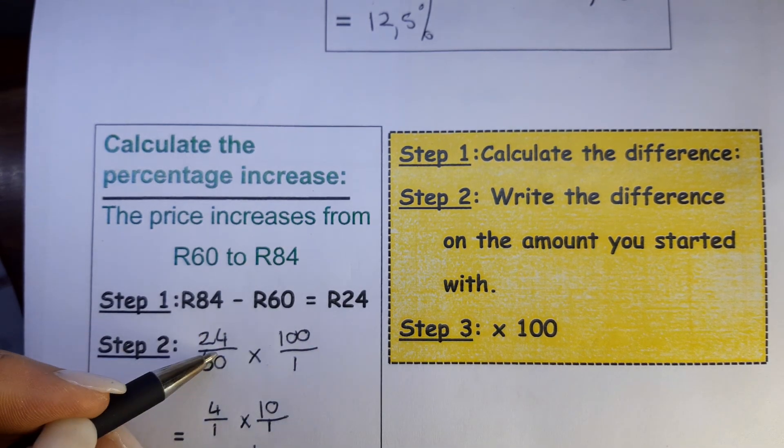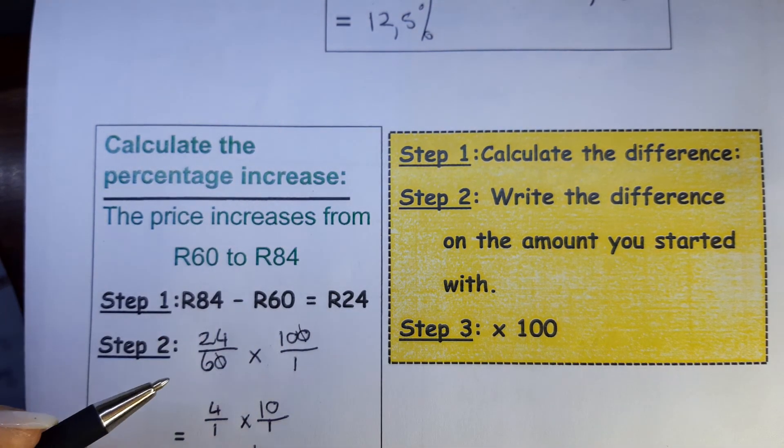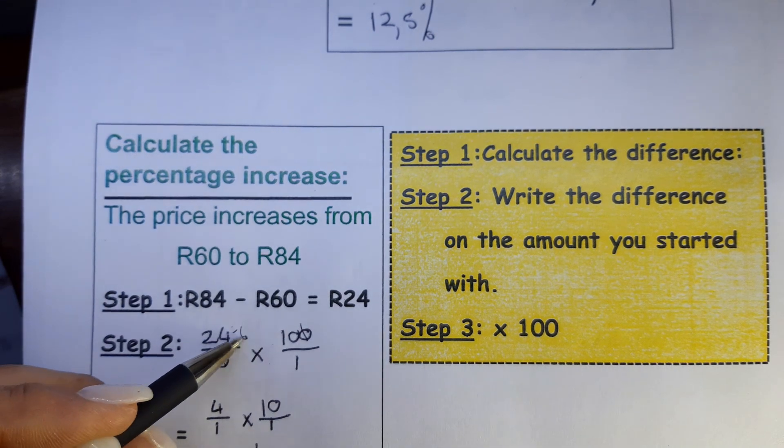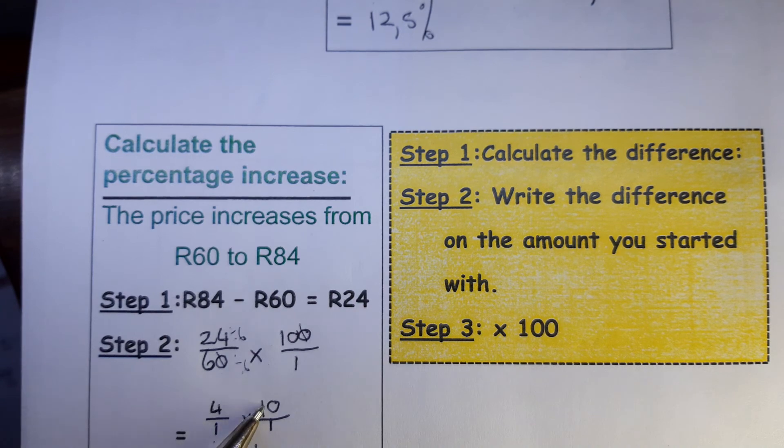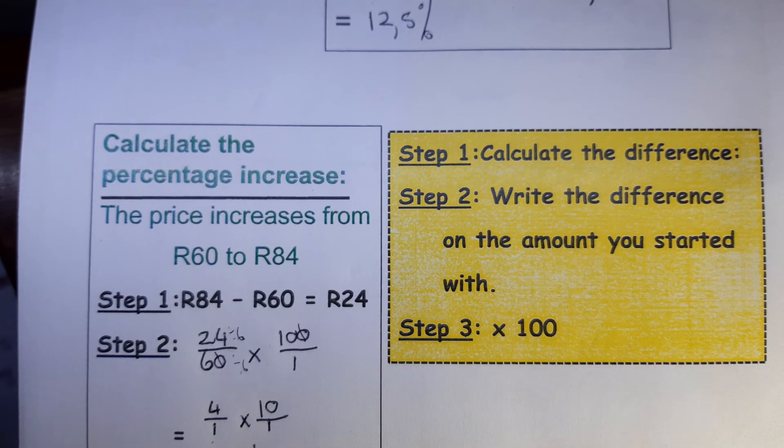So it's 24 over the 60 times by 100 over 1. Then you can simplify, you can divide there by 10 and 10 and divide by 6 there, divide by 6. That gives you 4 over 1 times by 10 over 1. That gives you 40%.